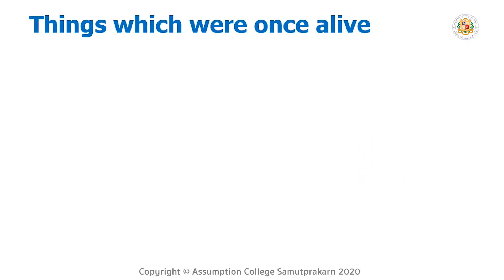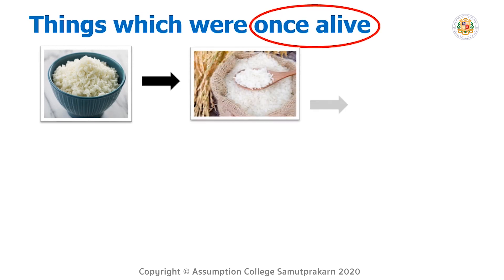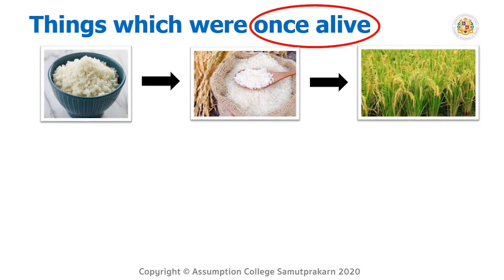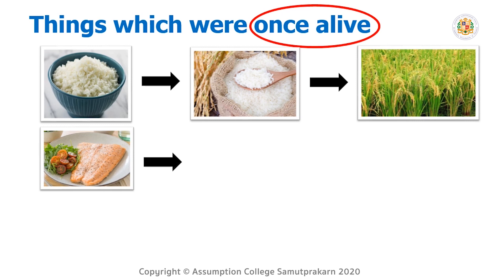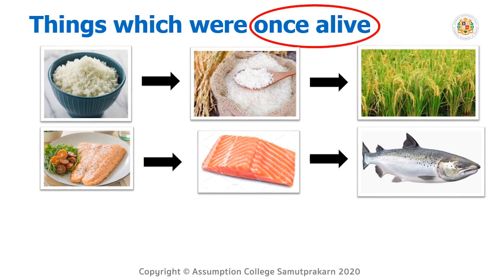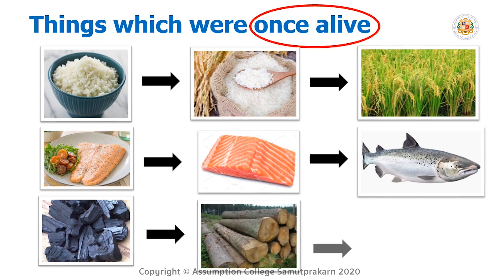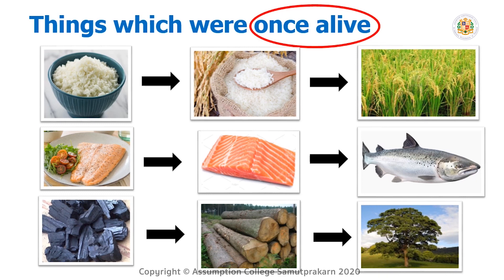Next, we have things in non-living things that were once alive — meaning at one time they had life. We have cooked rice — the rice comes from a rice field. We have steak — it's a salmon steak — and fried fish, which was once a salmon fish and had life. Next is coal — this coal comes from wood, from burning wood, which came from a tree. These things are the group of non-living things that were once alive.